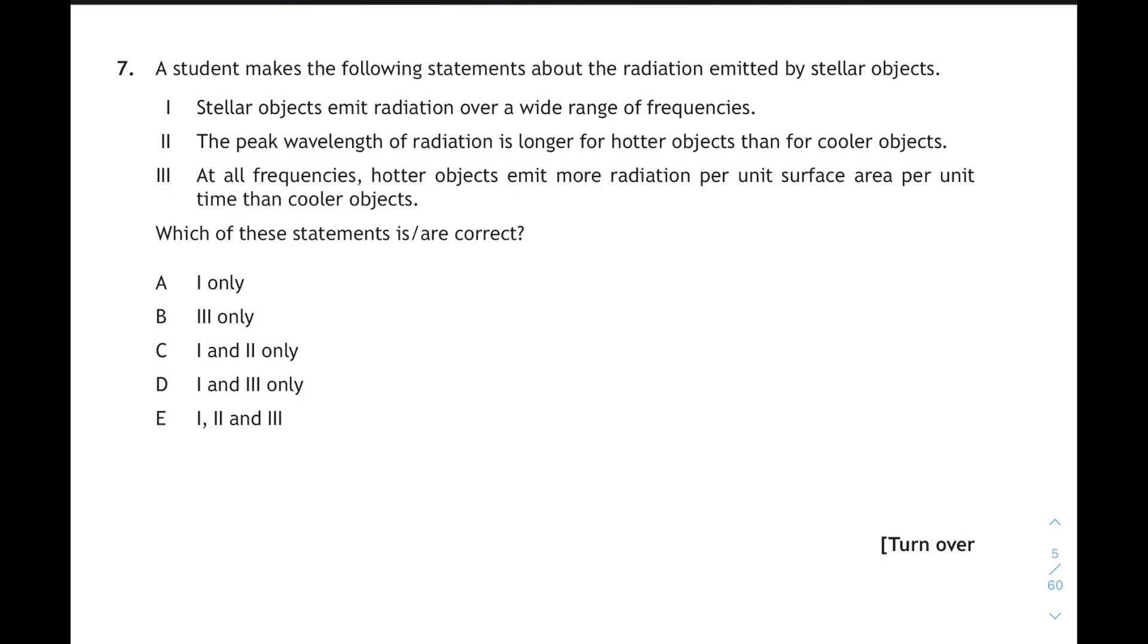Question 7. Three statements about stellar objects. Stellar objects emit radiation over a wide range of frequencies. Yes, they do. The peak wavelength of the radiation is longer for hotter objects than cooler objects. No, it's shorter. Towards the blue end of the spectrum. So not longer. Shorter. And statement three: At all frequencies, hotter objects emit more radiation per unit surface area per unit time than cooler objects. Blimey. That is correct, and it relates really to this diagram, which you should have seen.